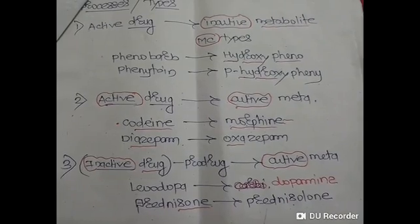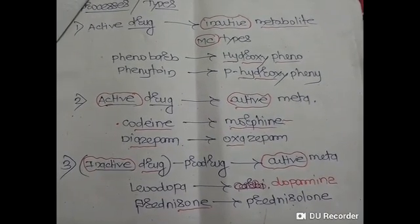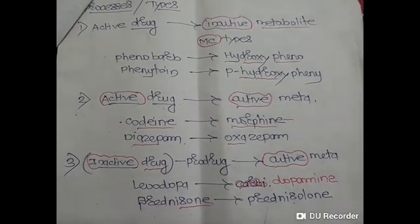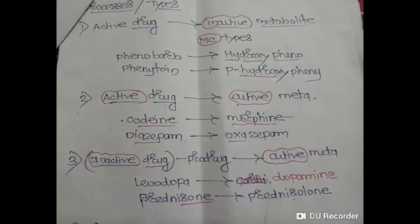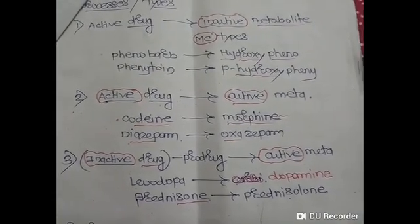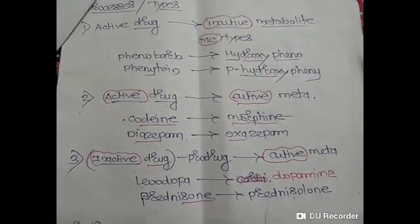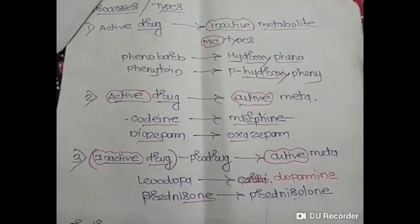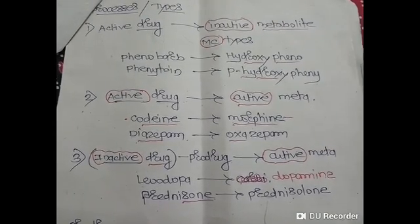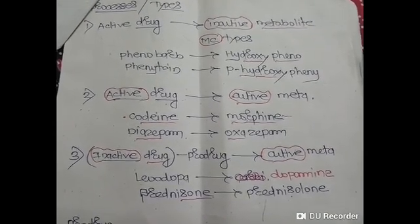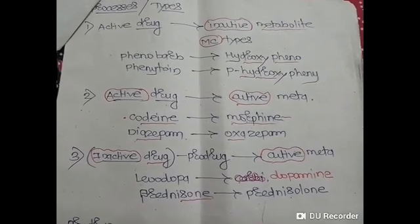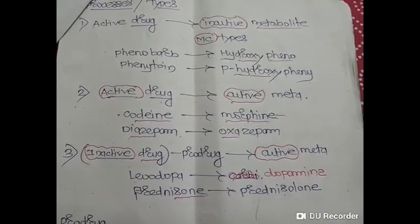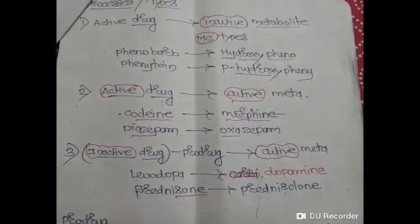We have discussed metabolism; now we will discuss types of metabolism. The most common type is where an active drug is converted into an inactive metabolite. For example, phenobarbitone is converted into hydroxyphenobarbitone, and phenytoin is converted into p-hydroxyphenytoin, both of which are inactive metabolites that get eliminated.